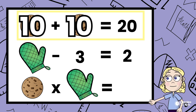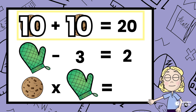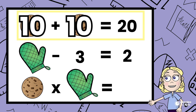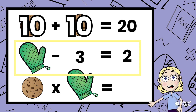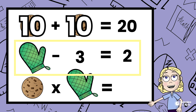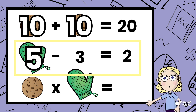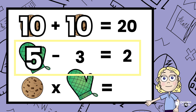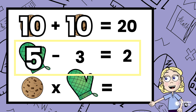Let's try 10. 10 plus 10 equals 20. All right, now that we know that the cookie represents 10, let's go on to the next one with the oven mitt. Oven mitt minus 3 equals 2. Hmm, what minus 3 equals 2? 5 minus 3 equals 2. So we know the oven mitt represents 5.